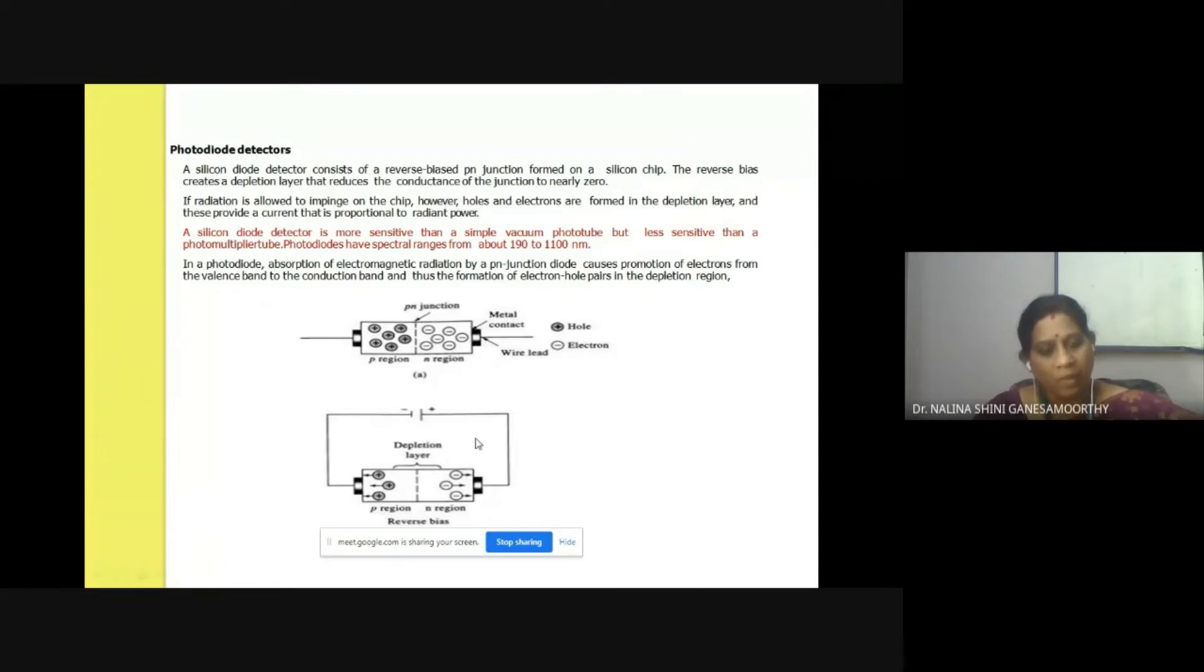As you have studied earlier, the silicon photodiode detector consists of a reverse biased PN junction formed on a silicon chip. That reverse bias creates a depletion layer that reduces the conductance of the junction to nearly zero. If radiation is allowed to impinge on this chip, let's look at this diagram.